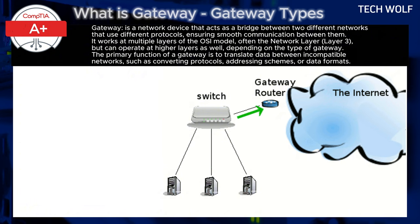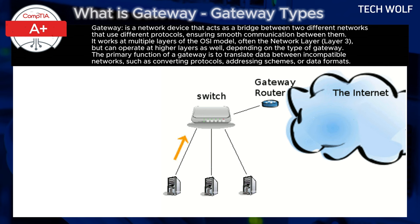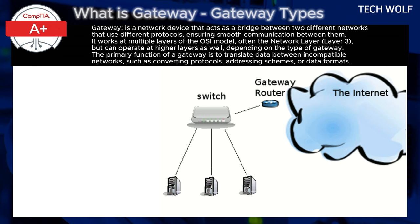The primary function of a gateway is to translate data between incompatible networks, such as converting protocols, addressing schemes, or data formats.